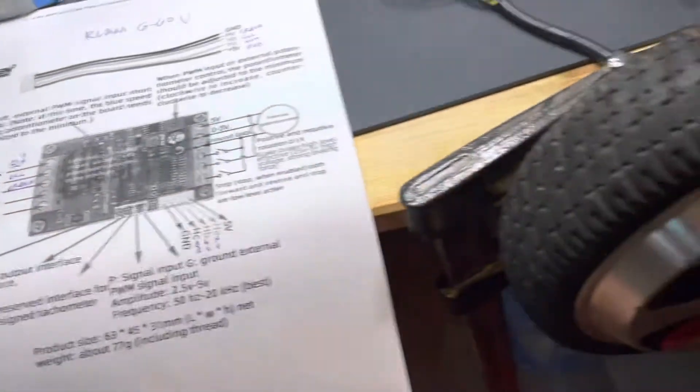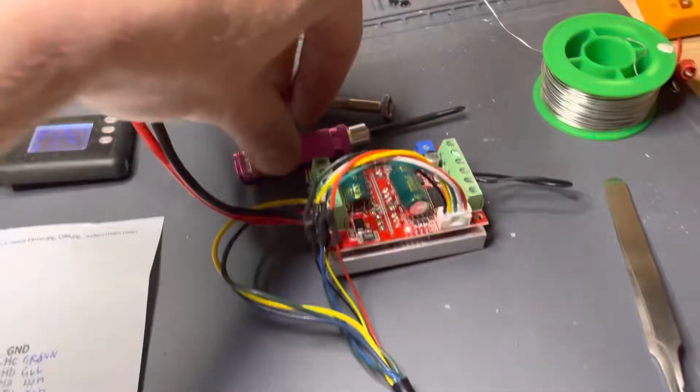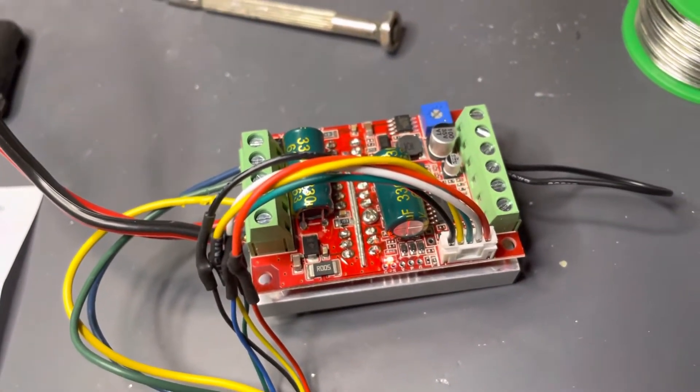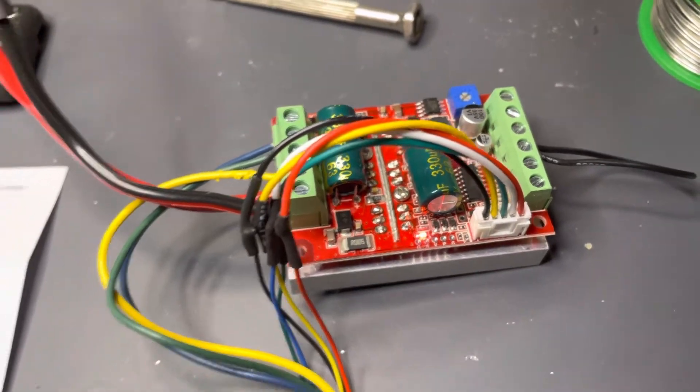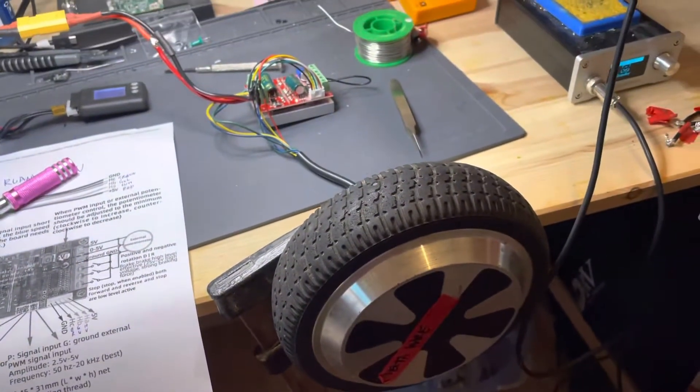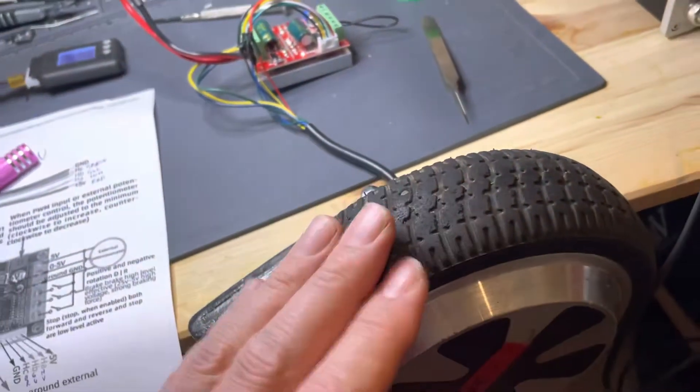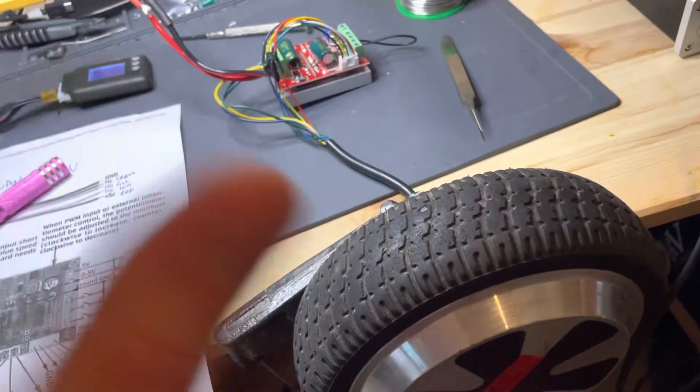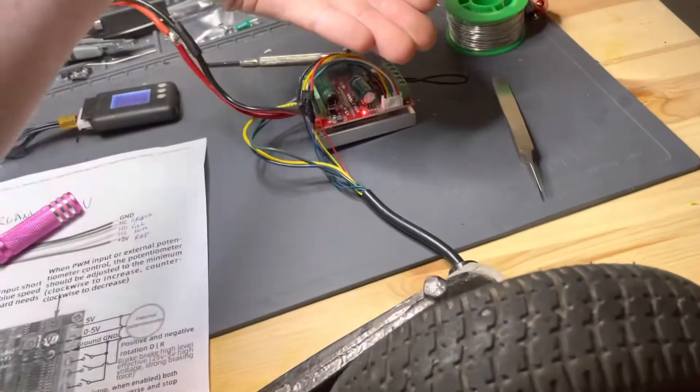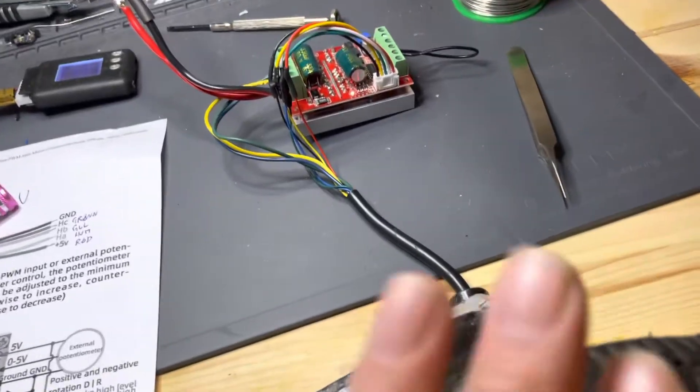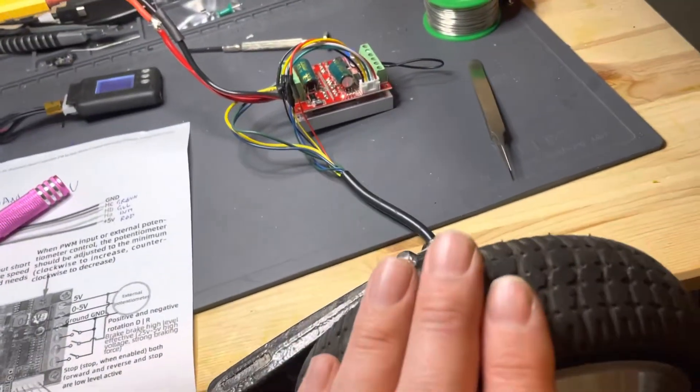This speed controller can run both ways, but it will run very slowly backwards. When you have two wheels, you actually want them to spin opposite direction of each other because one will be 180 degrees rotated compared to the other one, which means that one of them has to run in reverse.